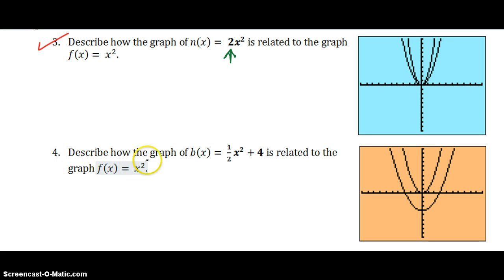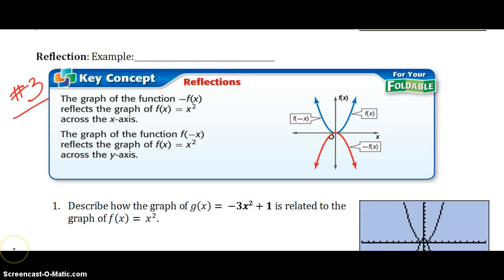Number 4, describe this graph. So 1 half, that's less than 1. So that tells us that it's going to be compressed. And the 4 tells us that it is translated, compressed and translated, translate up 4 units. Transformation. All these words are running together.